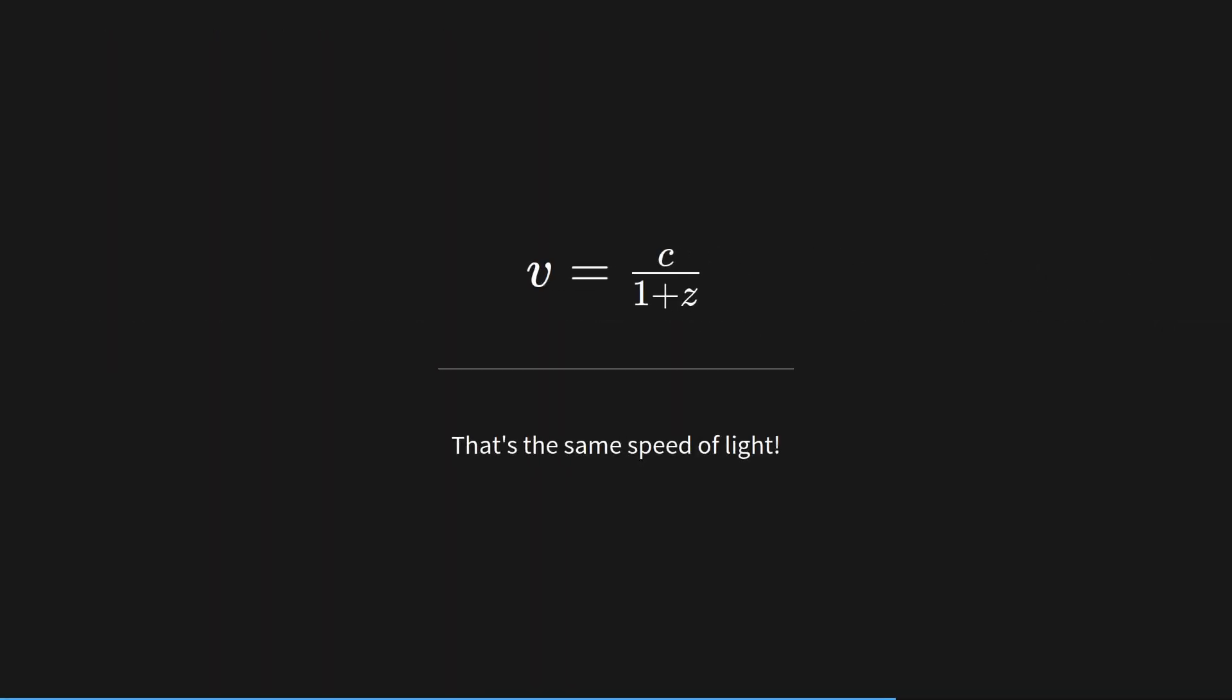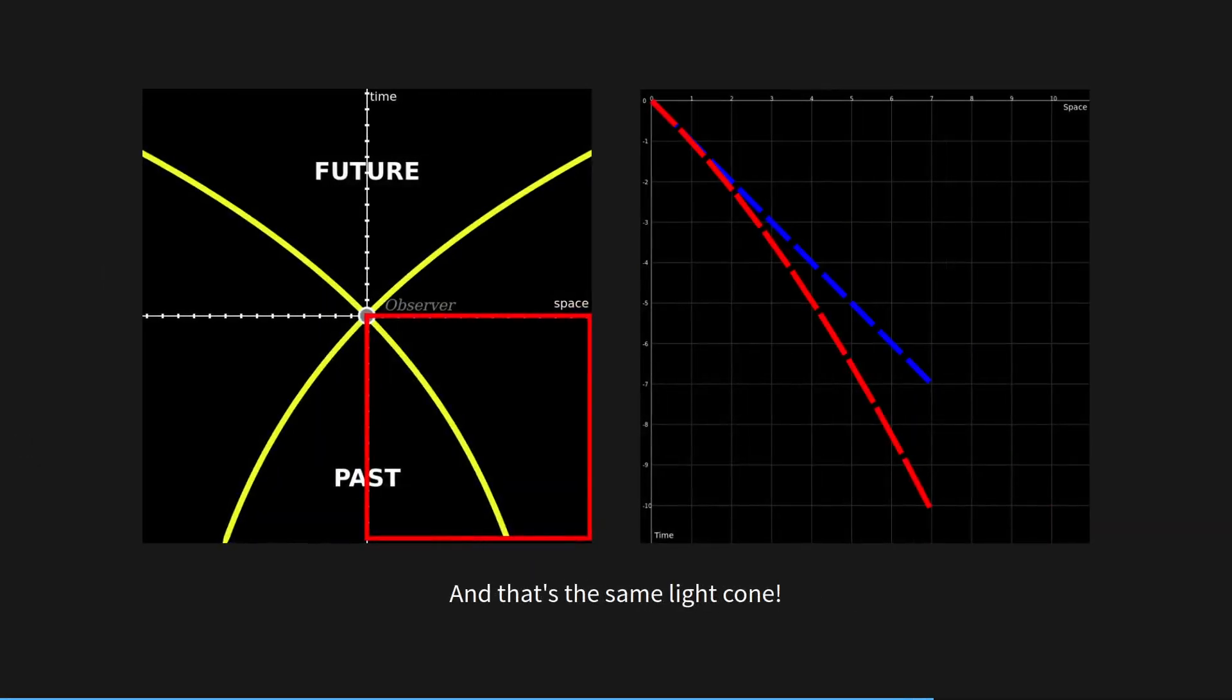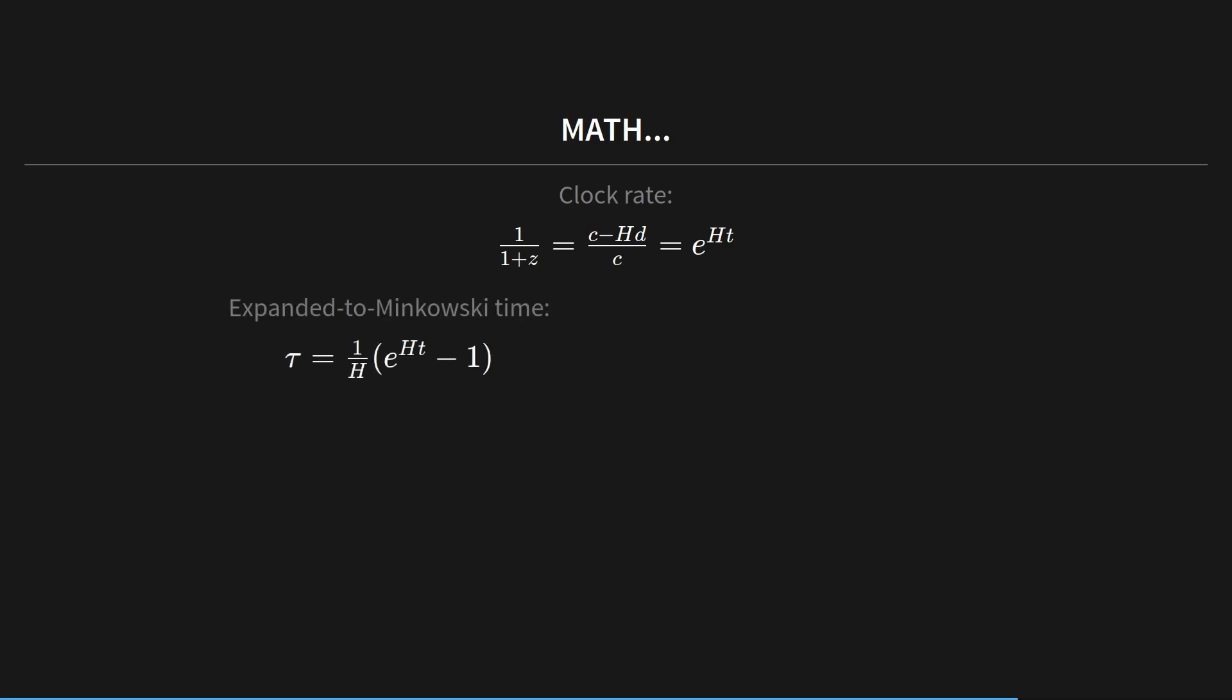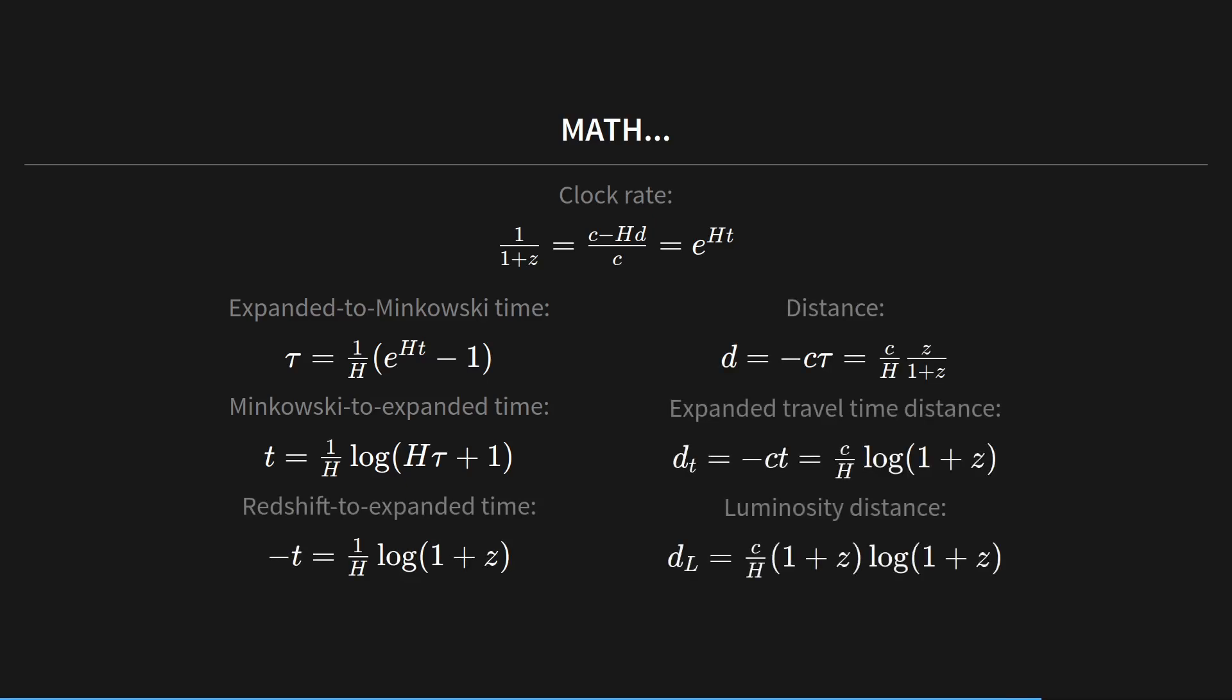Well, hey, that's what we were just talking about, C over 1 plus Z. And that's the same light cone. So if we set these equal to each other, and we solve for D, we get D equals C over H times Z over 1 plus Z. Here's some more math. It's basically calculating the clock rate based on redshift distance or time. So we can convert from expanded time to Minkowski time, and we can convert to distances. There's the luminosity distance.